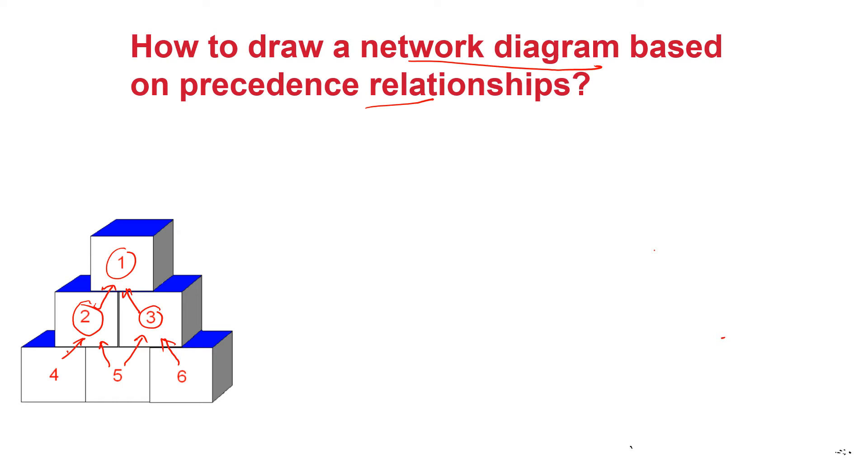So let's draw a standard network diagram that could be understood by project management professionals. So whenever we start a new project the norm is that we have a milestone activity which signifies start of a project. So here we start and here you can see 4, 5, 6 has got no predecessor. So these are the activities that could happen right away.